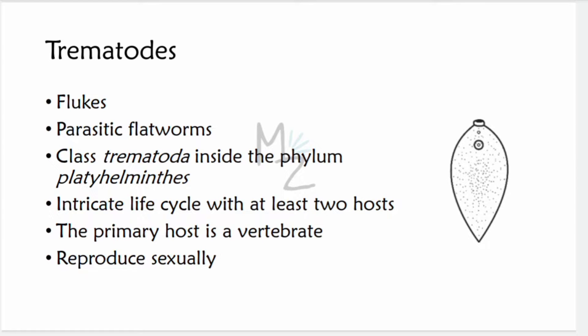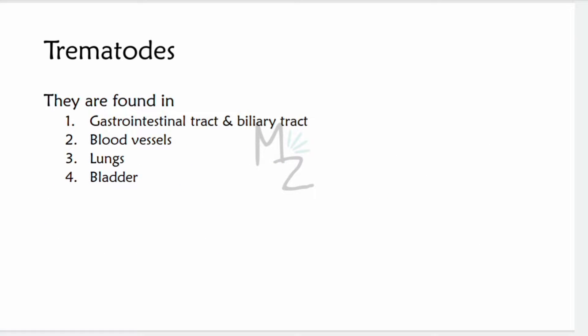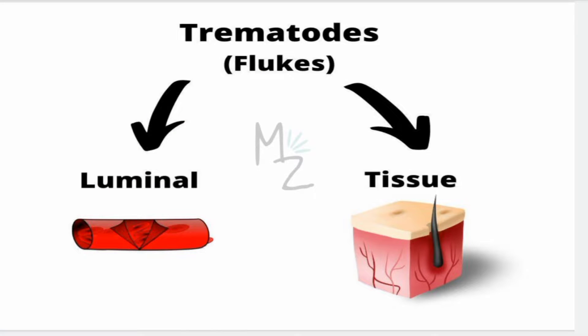Trematodes are flukes — parasitic flatworms. They belong to the class Trematoda and the phylum Platyhelminthes. They have an intricate life cycle with at least two hosts: one definitive and one intermediate host. The primary host is a vertebrate, and they reproduce sexually. Flukes look like a leaf. Trematodes are found in the gastrointestinal tract, biliary tract, blood vessels, lungs, and bladder. They are classified as luminal and tissue trematodes.